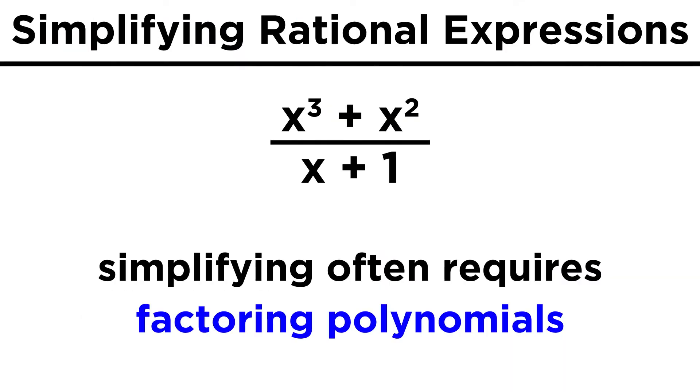First, we want to be able to simplify rational expressions. To do this, we must completely factor any polynomials, and get rid of any common factors in the numerator and denominator. For example,